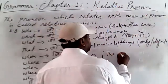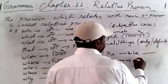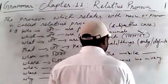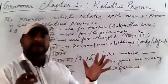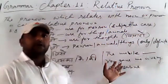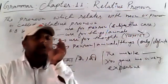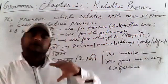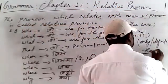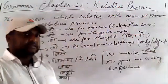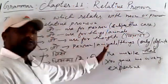For example: the mobile that you gave me is very expensive. Here we use 'that' because we are talking about a particular mobile — a definite noun. So 'that' is used for specific, definite nouns — persons, animals, and things.